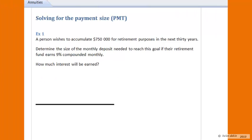Let's begin with example 1. A person wishes to accumulate $750,000 for retirement purposes in the next 30 years. Determine the size of the monthly deposit that is needed to reach this goal if their retirement fund earns 9% compounded monthly. Also, how much interest will be earned on this investment?